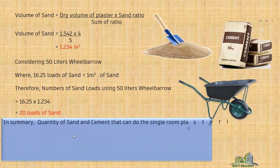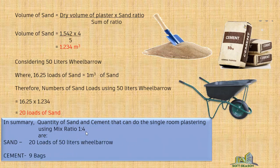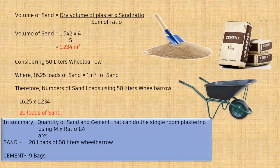Summary — the quantities of sand and cement required to plaster the room using mix ratio 1:4 are: sand — 20 loads using a 50-liter wheelbarrow, and cement — 9 bags. This is the requirement to plaster the internal and external walls of the room 3.6 by 3.6 by 3 meters. If you have questions, you can drop them in the comment section.